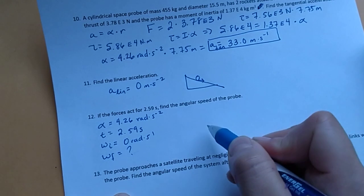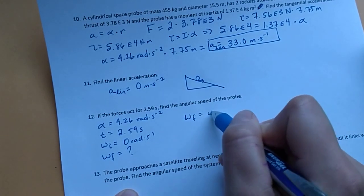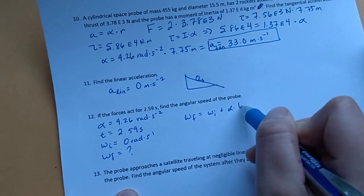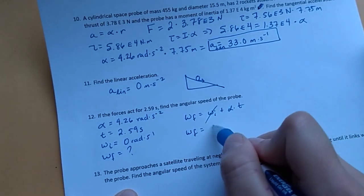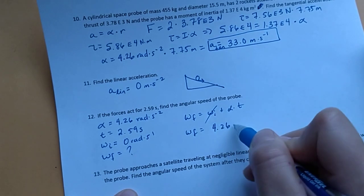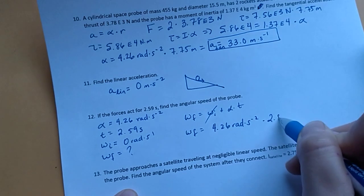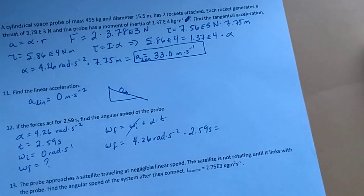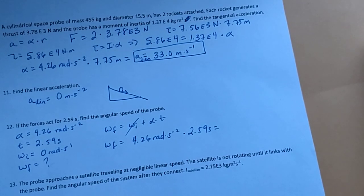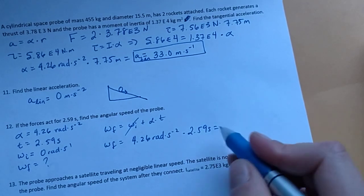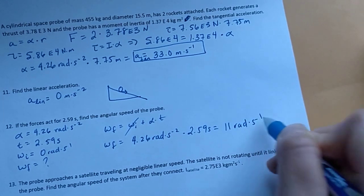That's unknown. So I go to the data booklet, omega final equals omega initial plus alpha times time. Omega final then is acceleration, angular acceleration, 4.26 rads per second squared times 2.59 seconds. 4.26 times 2.59 and I get a value of 11 rads per second. Cool.